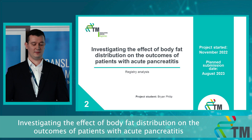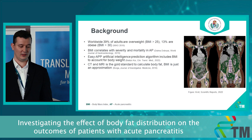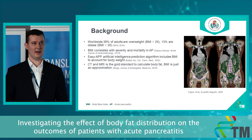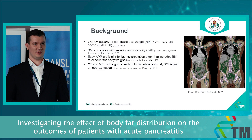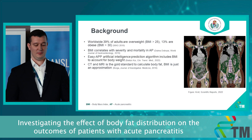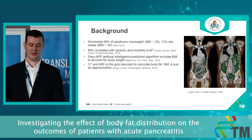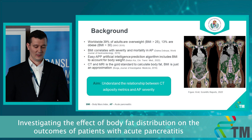Regarding the second project, we are investigating the effect of body fat distribution on the outcomes of patients with acute pancreatitis. Obesity and overweightness is a huge problem in today's society, and there is wide data showing that BMI correlates with pancreatitis severity and mortality. Some algorithms already include BMI, but the problem is that BMI is only an estimation of body composition and not an accurate measure — CT and MRI are the gold standard to calculate it.